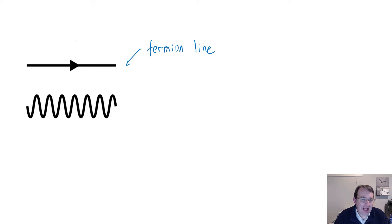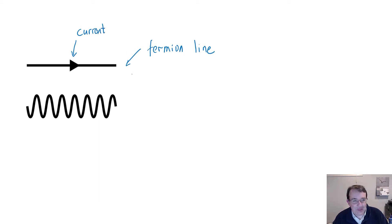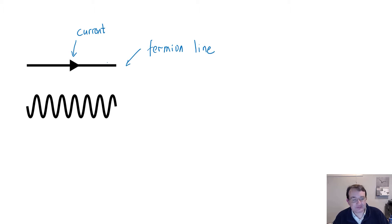The arrow on the fermion line represents the current — it is not the direction of motion. If a fermion is moving in the direction of its current, then it is a particle. If it is moving in the opposite direction to its current, then it is an antiparticle.